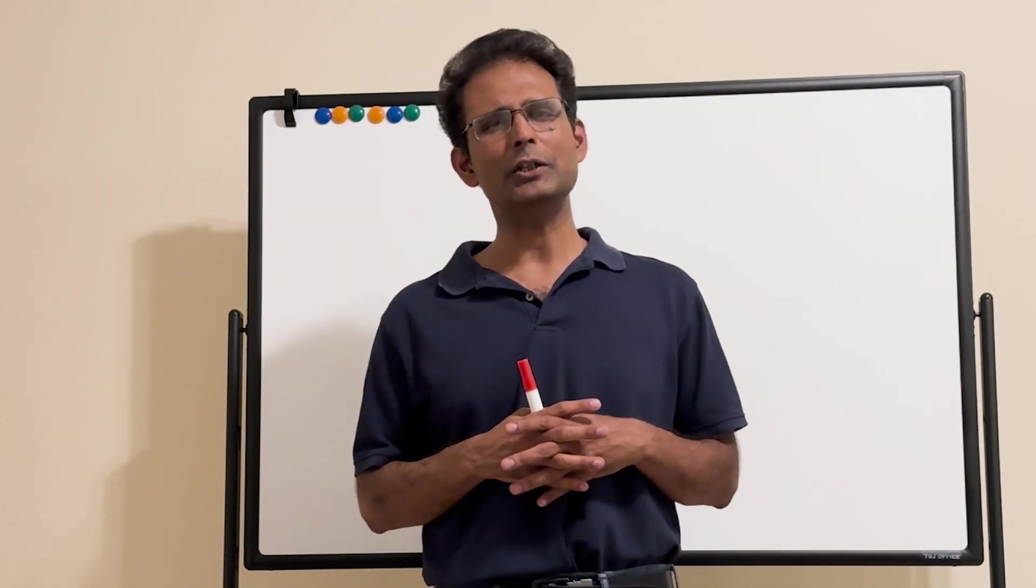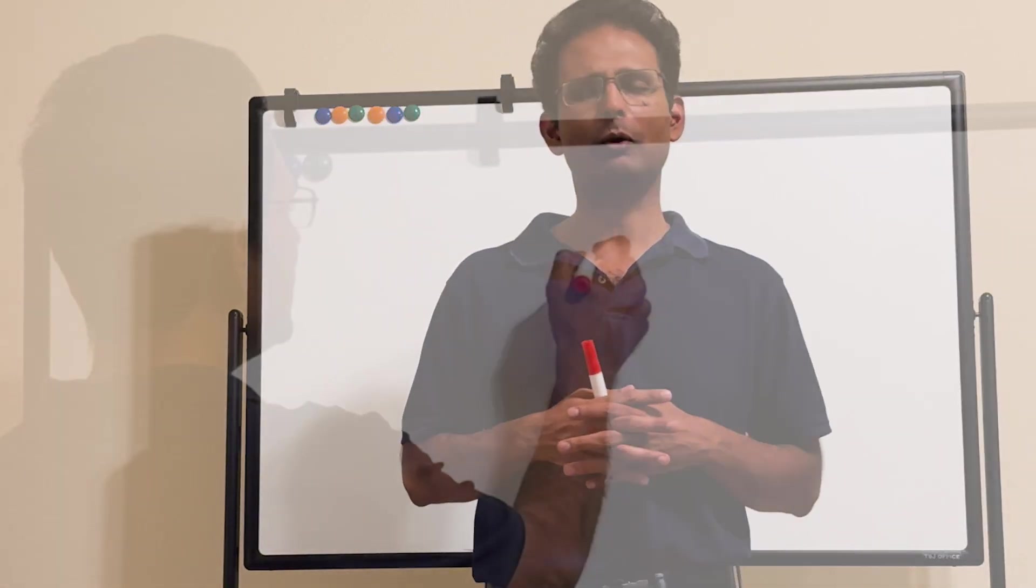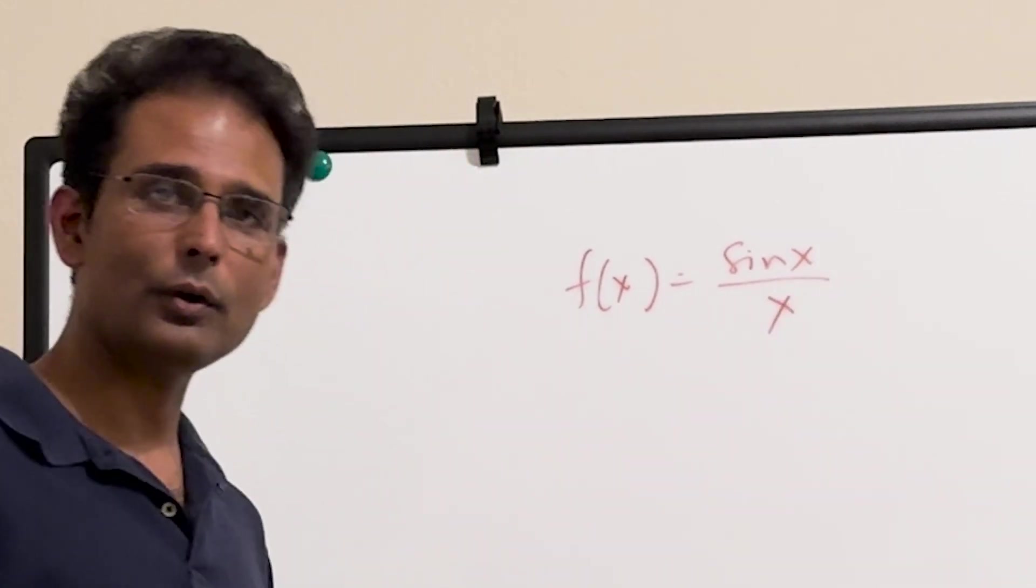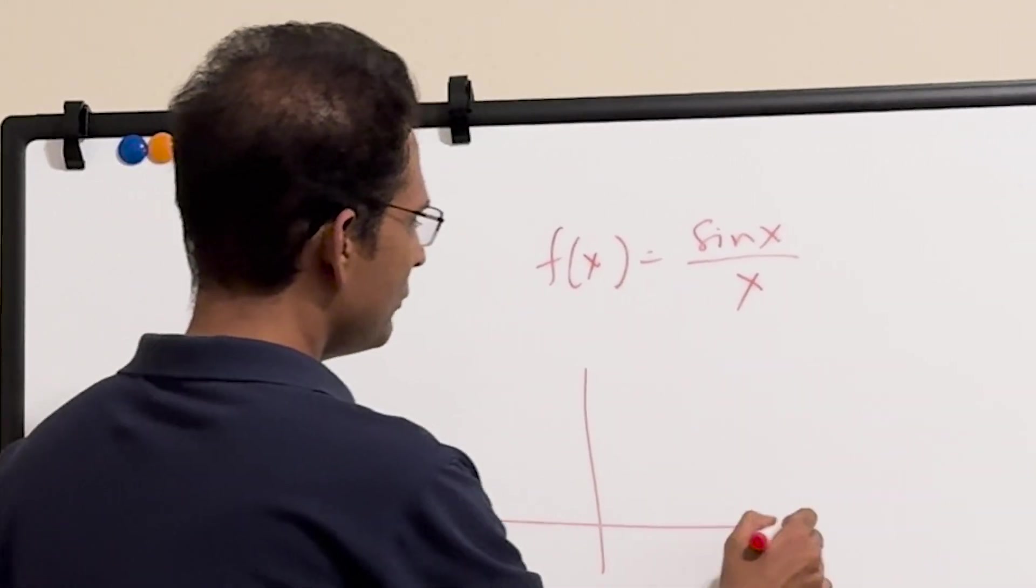So I don't think there's any deep reason for the coincidence that I'm going to show you, but it's kind of mind-blowing. f of x equal to sin x over x. Now how does this look like if I plot this graph versus x?